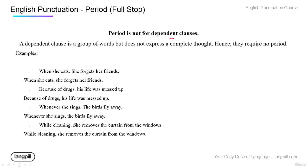We do not use periods for a dependent clause — a group of words that is not a complete thought. It doesn't have subject, predicate, and object; it can't stand by itself. For example: 'When she eats.' — not a complete thought, so instead of a period, use a comma: 'When she eats, she forgets her friends.' Same with 'Because of drugs, his life was messed up.' And 'Whenever she sings, the birds fly away.' Use a comma, then continue the sentence.